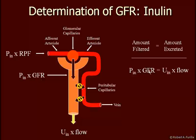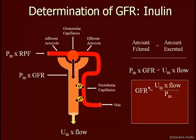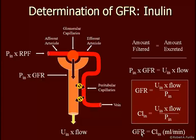We can rearrange this formula and calculate GFR. GFR equals the urine concentration of inulin times urine flow divided by the plasma concentration of inulin. We can see that that's exactly the same as our calculation of clearance of inulin. The clearance of any substance X — in this case inulin — equals the urine concentration of that substance times urine flow divided by the plasma concentration of inulin. These two equations are identical. Therefore, GFR must equal the clearance of inulin. Once we calculate the clearance of inulin, we now know GFR.